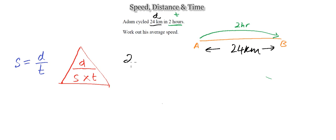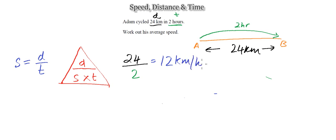So that's 24 kilometers divided by 2 hours, which gives us 12. Now for the units: distance is in kilometers and time is in hours, so combining them gives kilometers per hour. Therefore Adam is traveling at 12 kilometers per hour in order to cover the 24-kilometer distance within two hours.